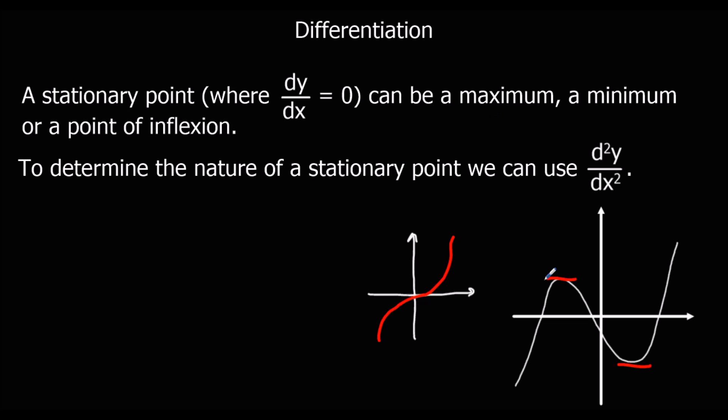So a maximum is a top turning point. A minimum is a bottom turning point. And a point of inflection is where the gradient goes to zero but then carries on going in the same direction.